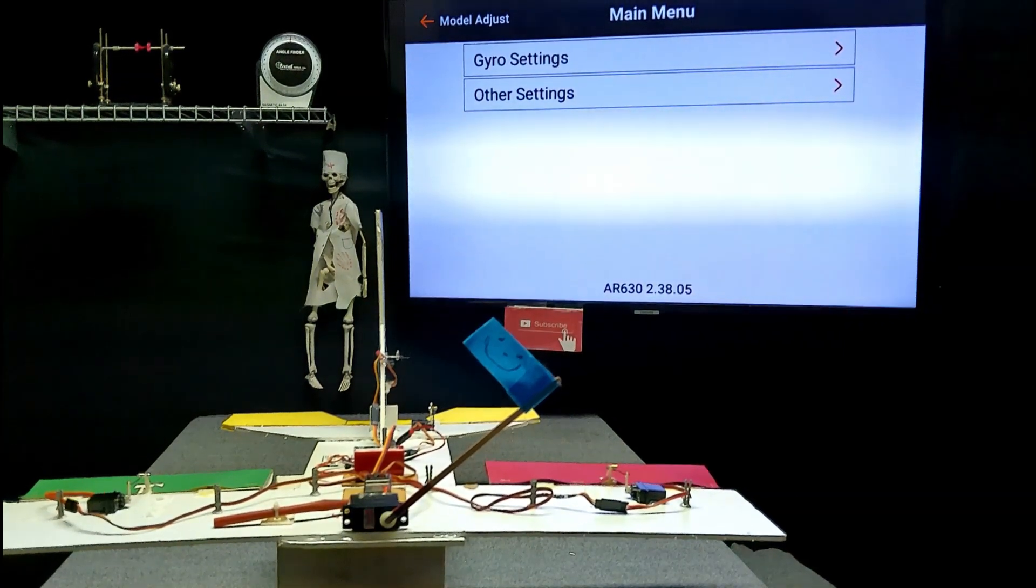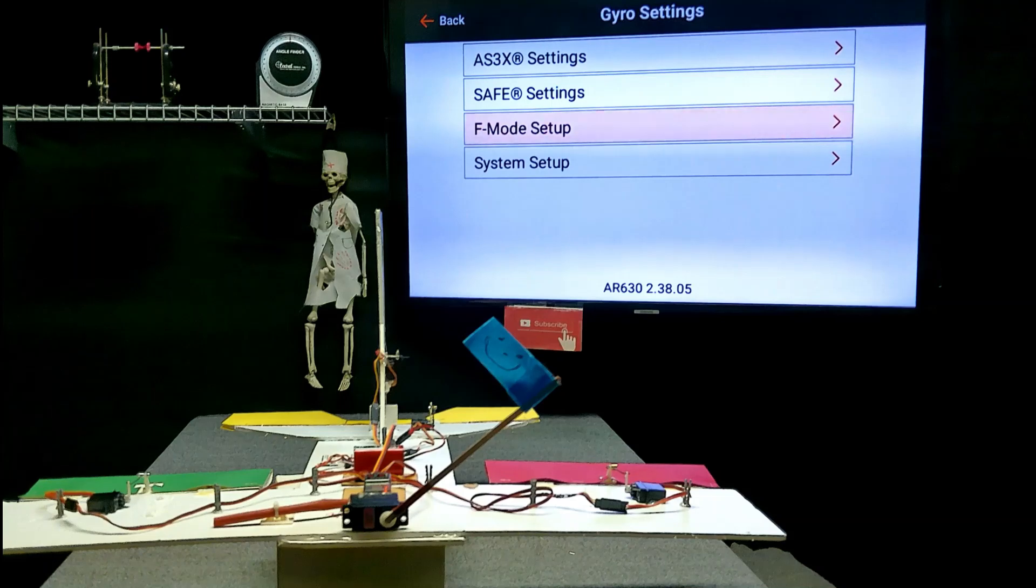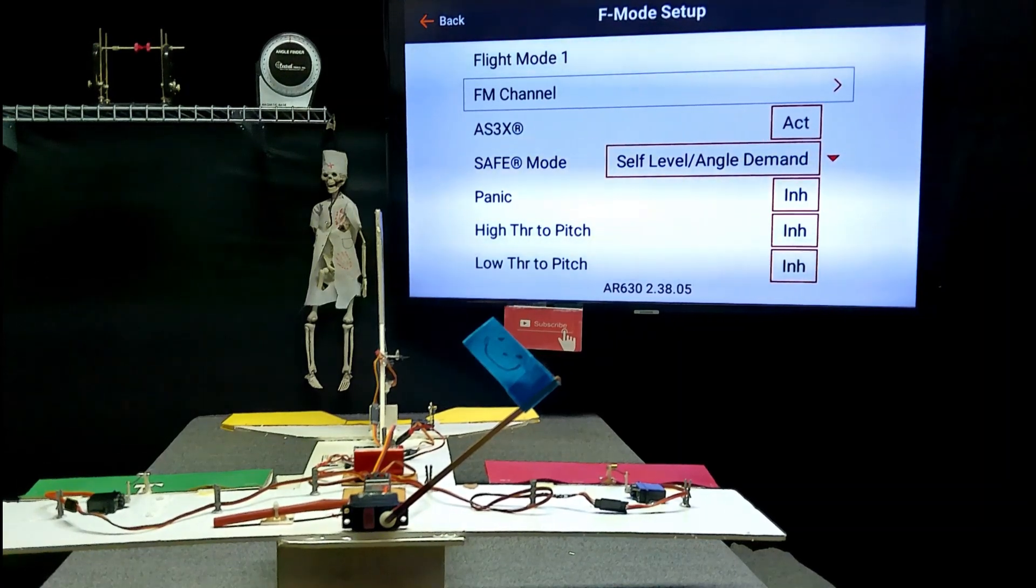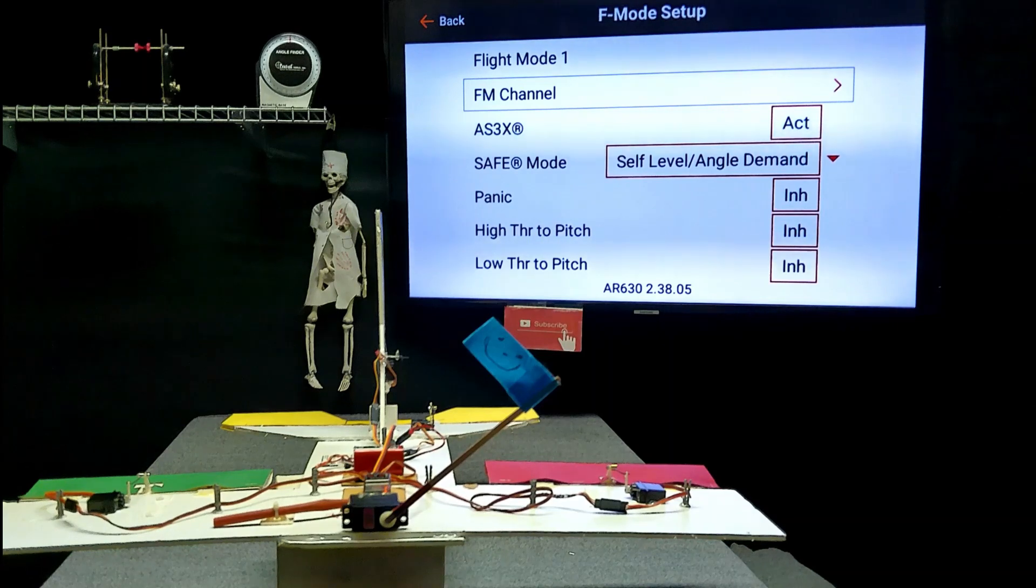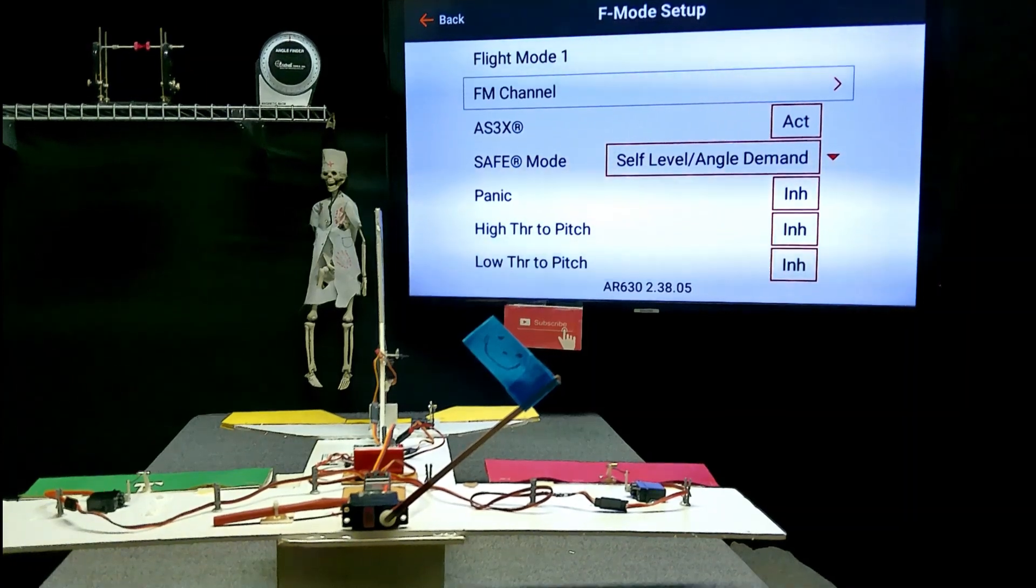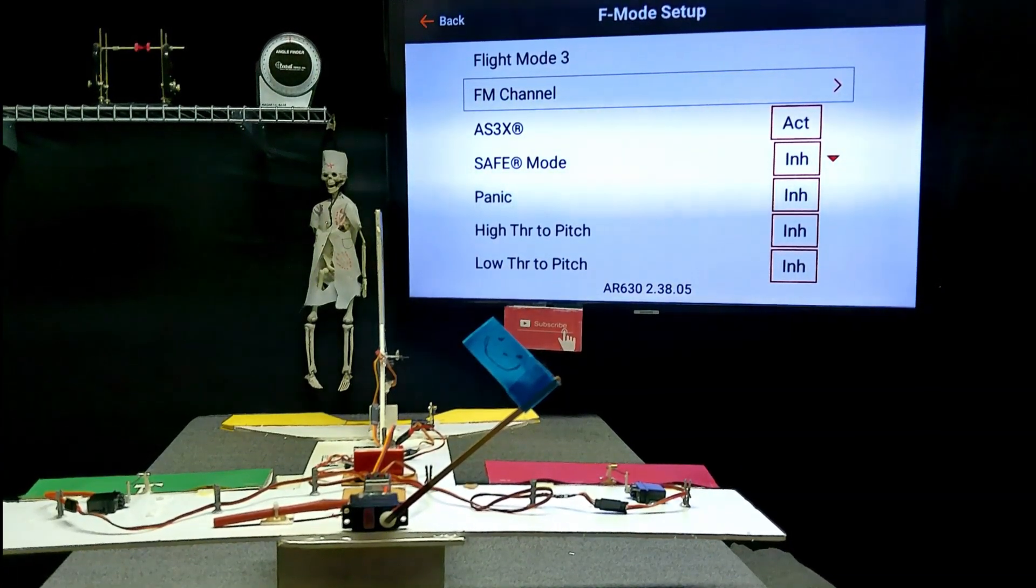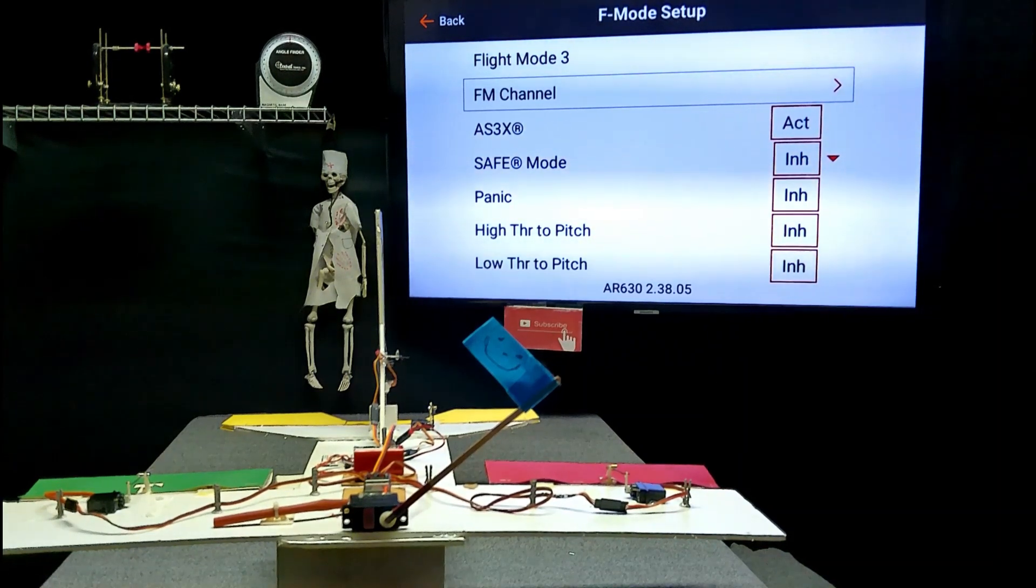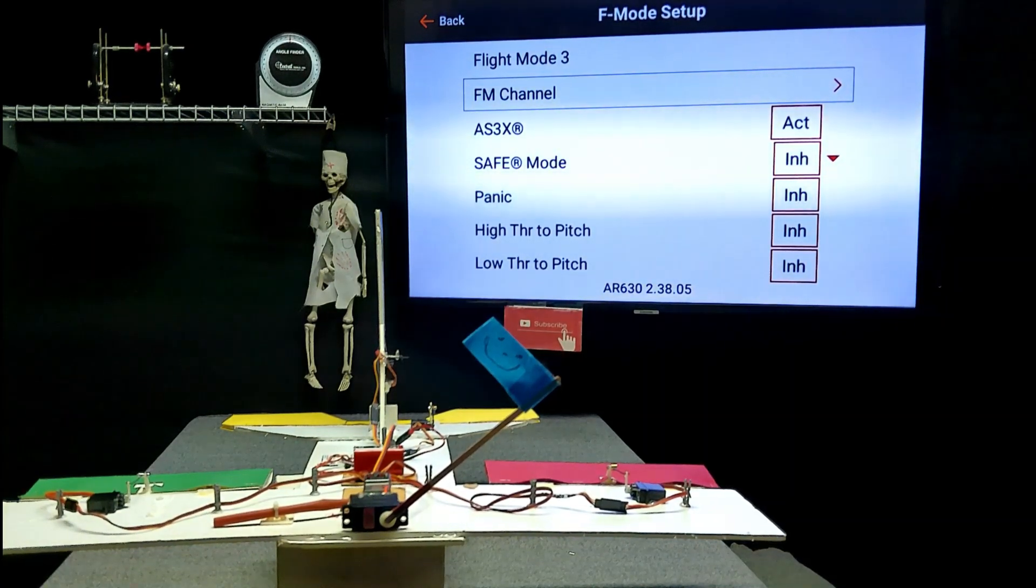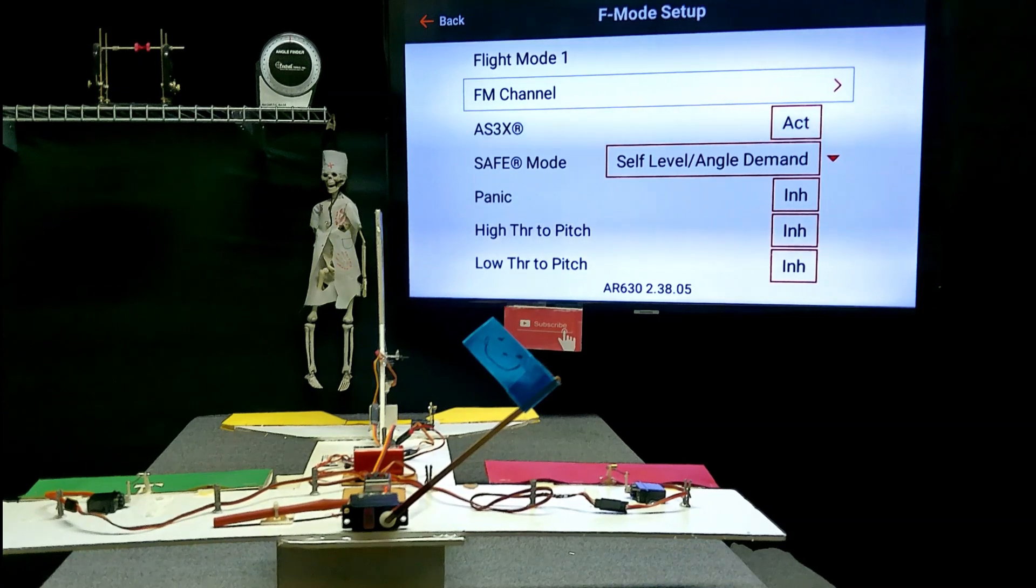And you've got an on switch you can turn off and on. So, we'll go back here to gyro settings and the flight mode setup. So, the switch is back towards me. Flight mode 1 shows AS3X is active and it shows that safe mode is set to self-level angle demand. Now, when I flip our flight mode switch forward, now AS3X is active and safe is off. So, when our switch is in forward, it's in flight mode 3, AS3X only. We flip the switch backwards, we have the AS3X and safe select in a safe self-leveling and angle demand.